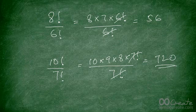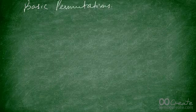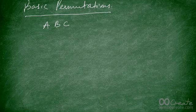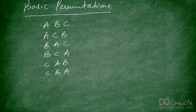I hope the concept of factorials is clear. Moving on to basic permutations: let's say a question asks you to arrange three letters — A, B, C. How many arrangements are possible? We can write them down: ABC, ACB, BAC, BCA, CAB, CBA — a total of six arrangements. But writing them out can be time-consuming and error-prone, so there's an easier way.